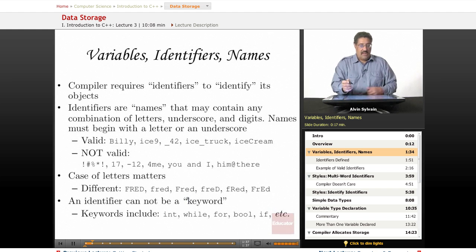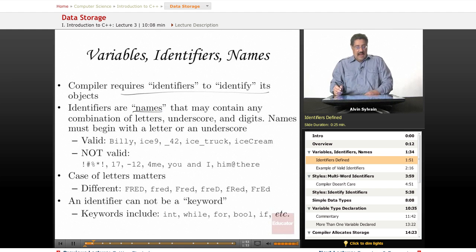Now the compiler for C++ requires identifiers to identify various objects, particular variables, structures, objects, etc. Identifiers are names, and a name may contain any combination, almost, of letters,